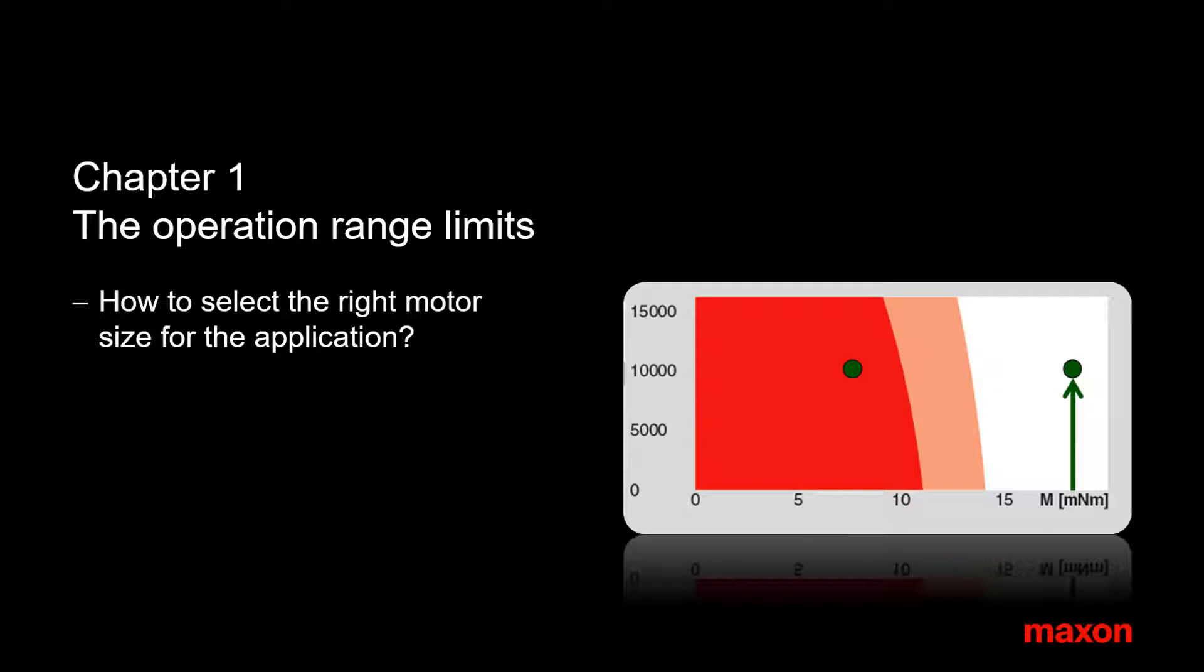In the first chapter we treat the motor speed and torque limitation. It's about finding the right motor type and size to cover all the operation points.